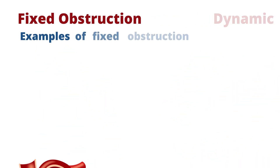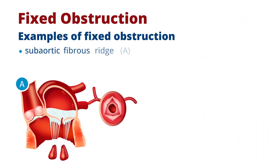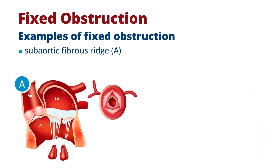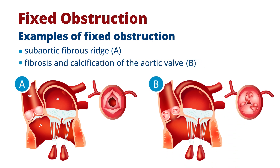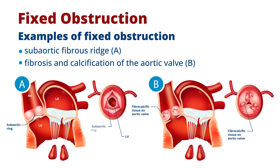A fixed obstruction results in a uniform resistance to blood flow throughout systole. This is usually the result of a rigid structure like a calcified aortic valve or a fibrous ring below or above the aortic valve.